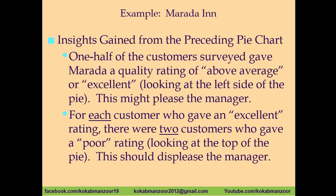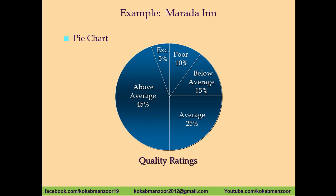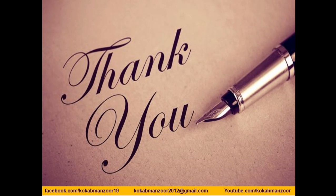The benefit of the pie chart is that just by looking at the circle you can see that almost 50% of the people rated the restaurant above average. When data is presented in a table it may not be very clear, but this chart immediately shows that the majority rated the accommodation above average, and about one quarter rated it either excellent or poor. This is the benefit of drawing a pie chart. I hope the concept is clear — if there is any confusion, you can ask. Thank you very much, take care and stay blessed.